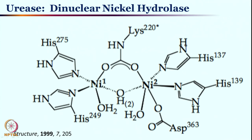This is a dinickel species — the previous case had a dimanganese species, now we see dinickel. As discussed earlier, these metal centers are essentially Lewis acids, helping to deprotonate water to make hydroxide under physiological conditions. They also activate the substrate directly by coordinating it with the metal center. During this process, other side chains present nearby also help in carrying out the reactivity quite effectively.